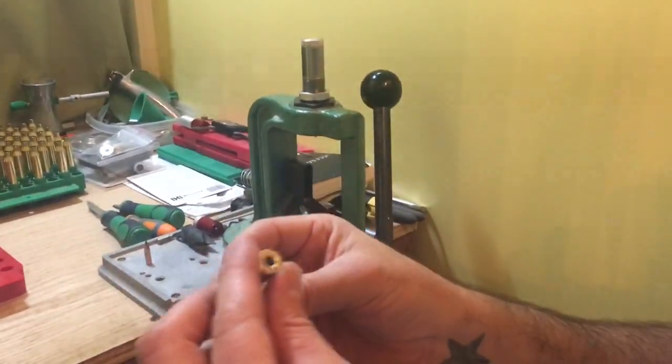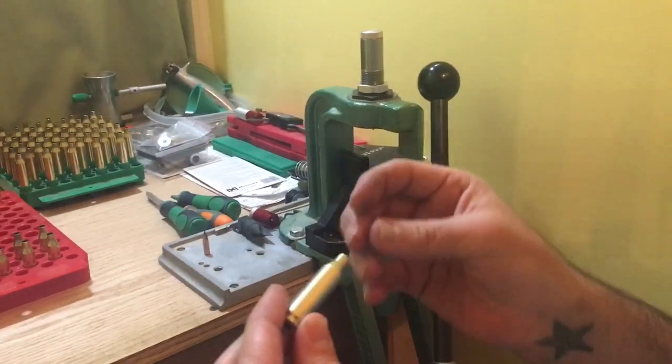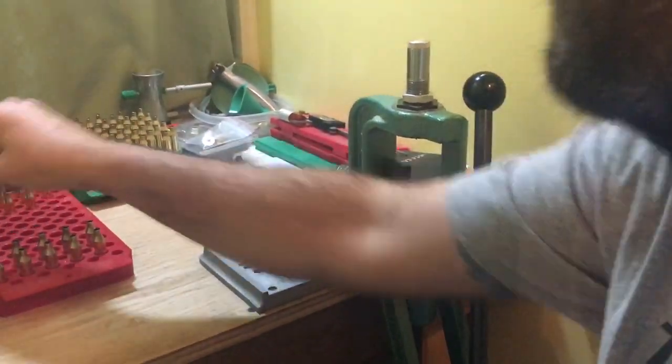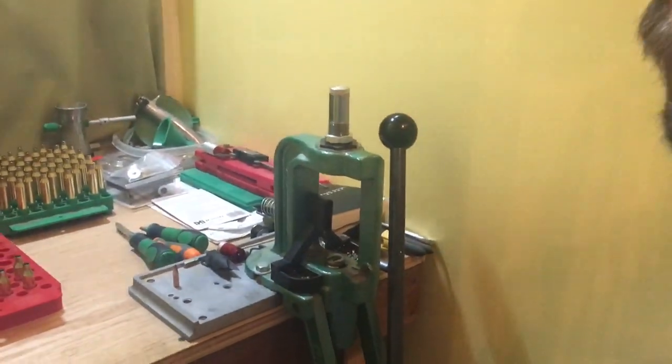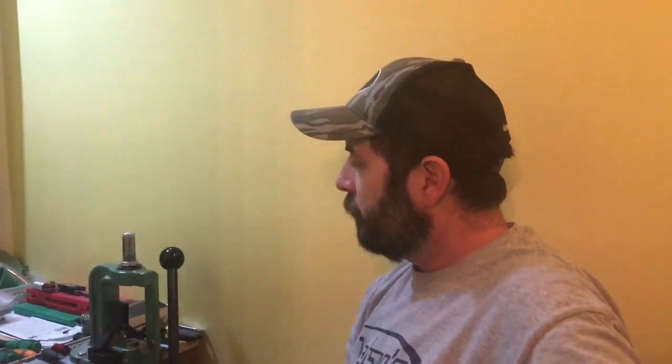But like I said, all we got to do is clean that primer pocket and check the overall length. Should be fine. And these will be ready to load up. If you're looking for one of these, go to Midway and check them out. You can get these for probably about $30. They're great.